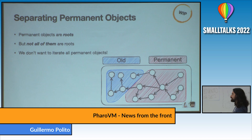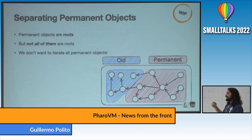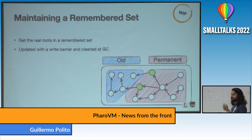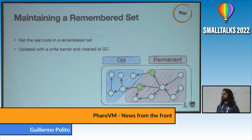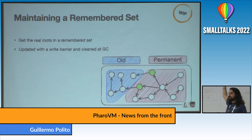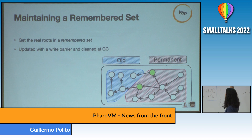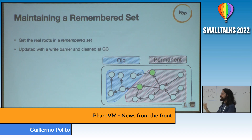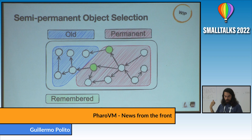This work is mainly done by Pablo and Noel. The technique we are using is a remembered set — a standard garbage collector technique. You have a set where you store the objects at the frontier between the permanent and old space. That set is maintained using a write barrier: every time an instance variable is written, you check and add stuff to the remembered set. The remembered set is cleaned every time a GC runs and verifies it doesn't hold anymore. This is already working — we now have the old space, the permanent space, and the remembered set.